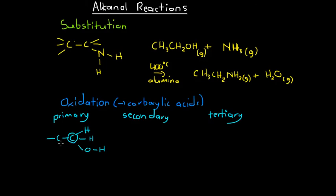For a primary alkanol, the carbon that the hydroxyl group is bonded to is only bonded to one other carbon — this places the hydroxyl at the end of a carbon chain. For a secondary alkanol, the carbon bonded to the hydroxyl group is bonded to two other carbons, placing the hydroxyl in the middle of a carbon chain.